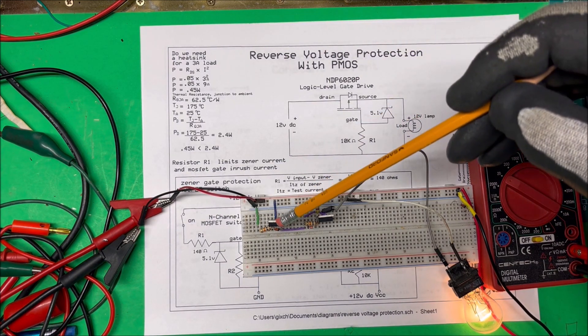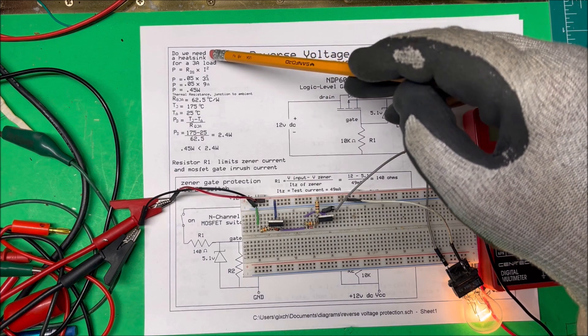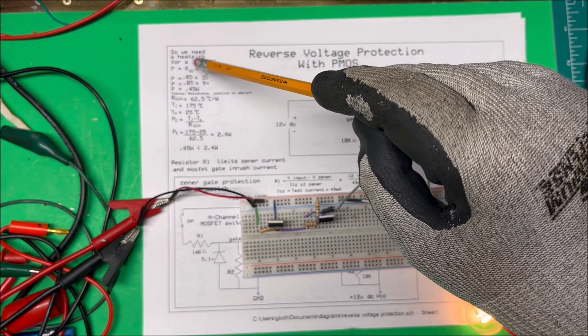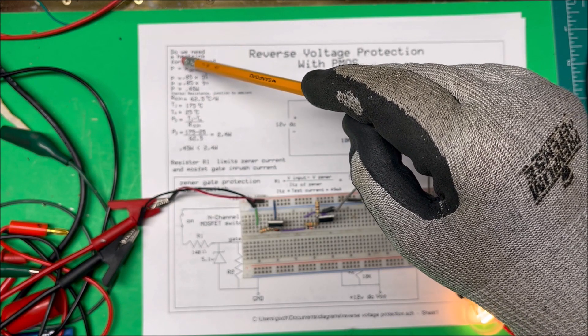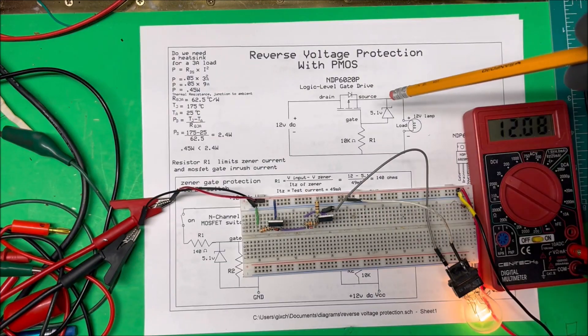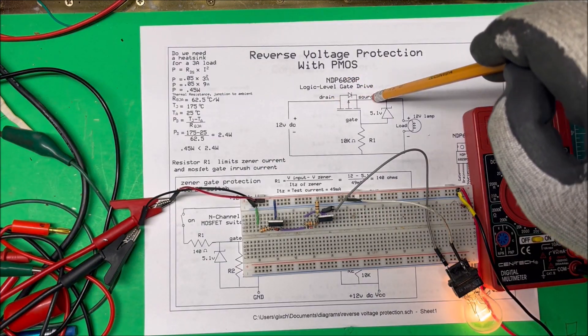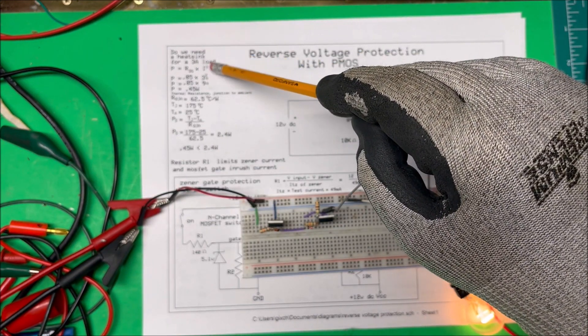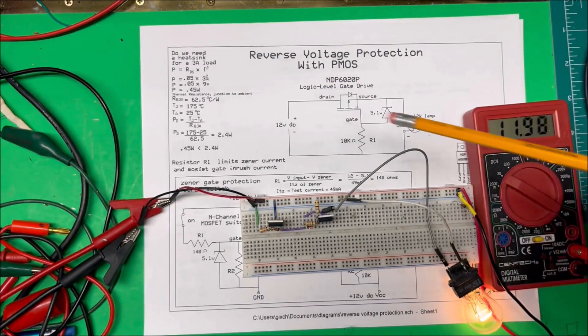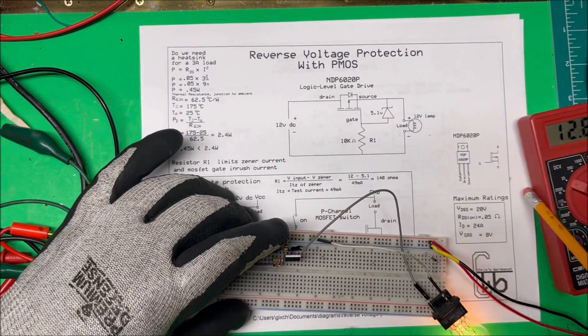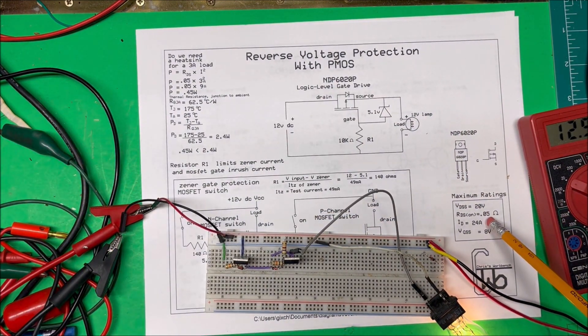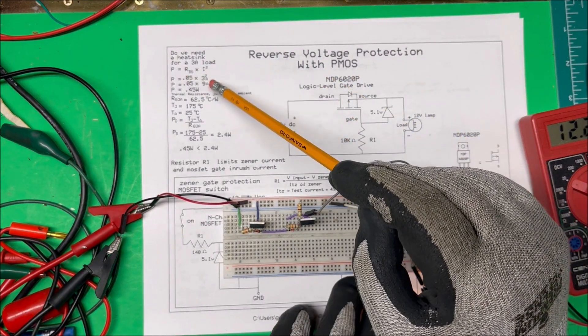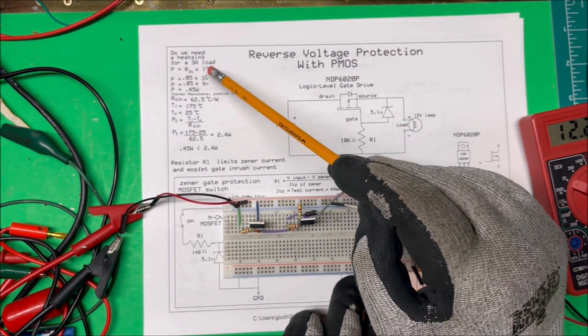Now, are we going to need a heat sink on this? Say I have a three-amp load here. The power is equal to the RDS, which is the drain-source resistance, times the current squared. So our three amps squared. Now the RDS down here is 0.05 ohms—they're very, very small.